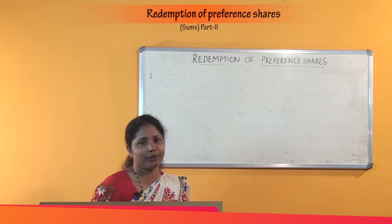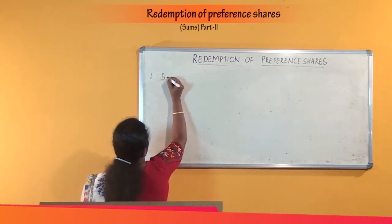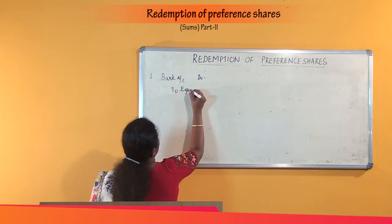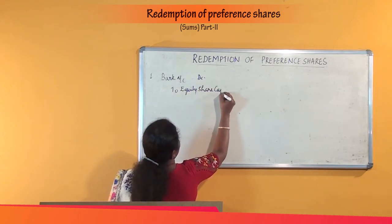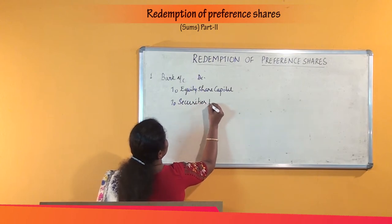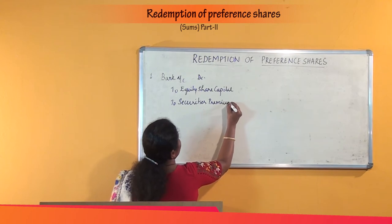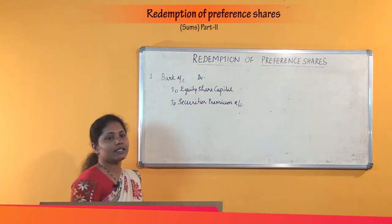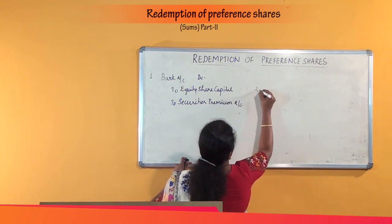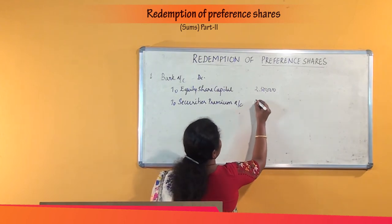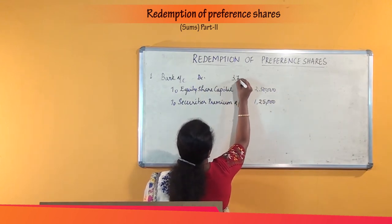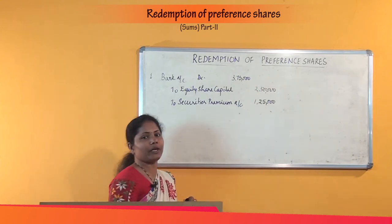First, we can pass the entry for fresh issue of shares. As the shares are issued at a premium of rupees 1,25,000, the entry is: Bank Account debit, to Equity Share Capital Account with the nominal value of shares, and to Securities Premium Account. As the shares are issued at a premium, the premium amount is credited to a separate account called Securities Premium Account. The proceeds from fresh issue of shares is 2,50,000; the premium is 1,25,000, and the total amount received is 3,75,000. This is the entry for fresh issue of equity shares at a premium.